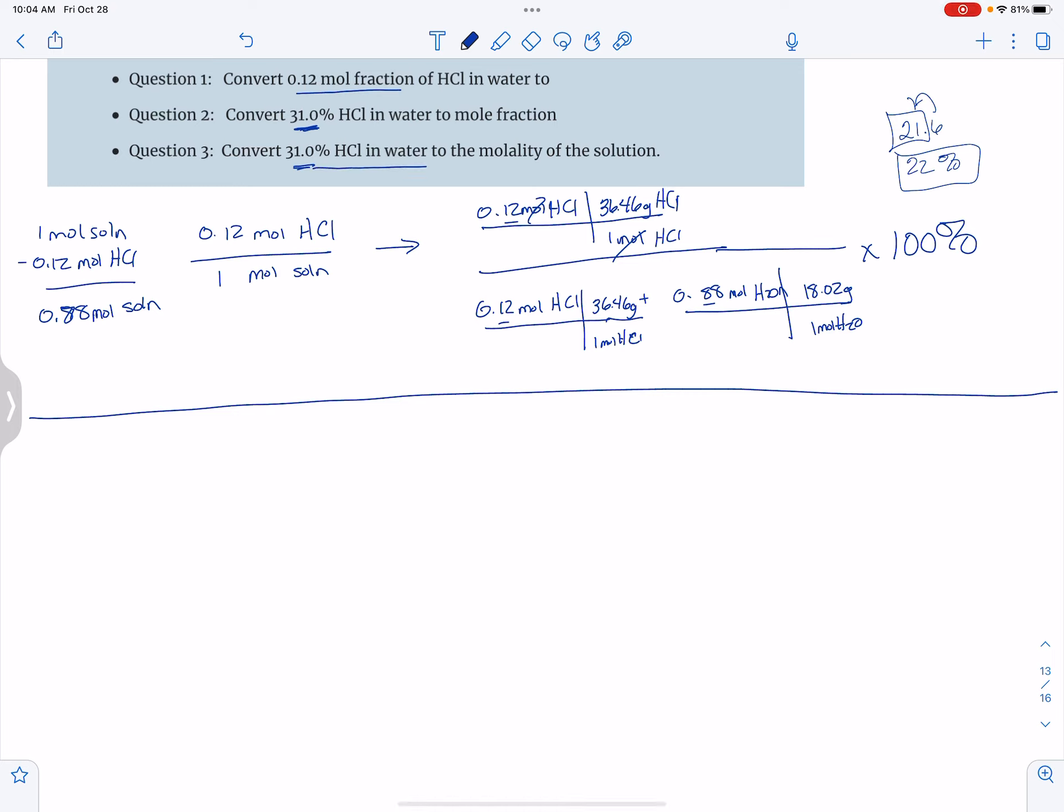This one takes it a step further, so you're going to want to be thinking about how you'll do this to make sure you're actually understanding the concepts. I'm going to take 31% of HCl and know that my mass formula—mass over mass, HCl over solution—that value